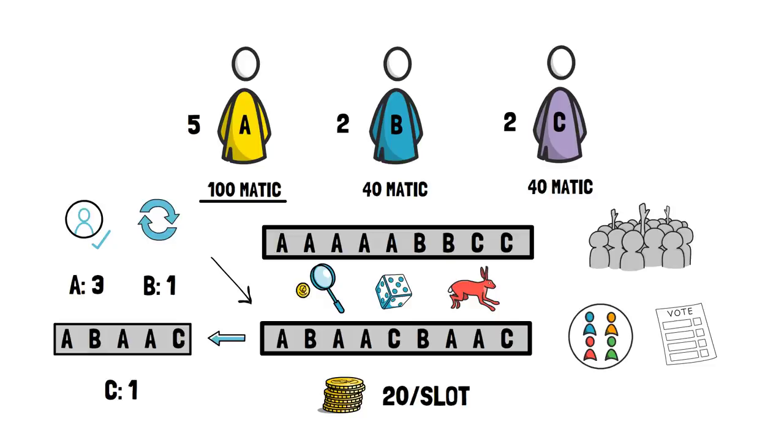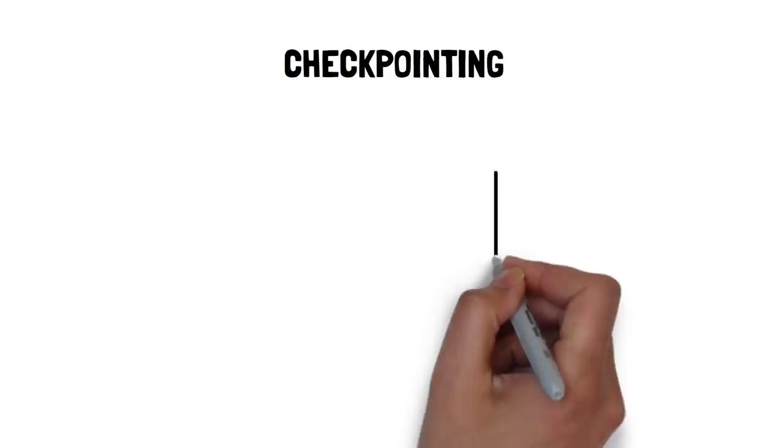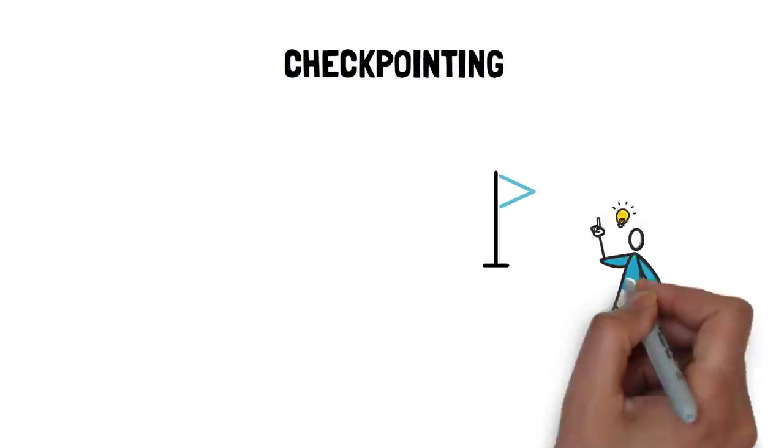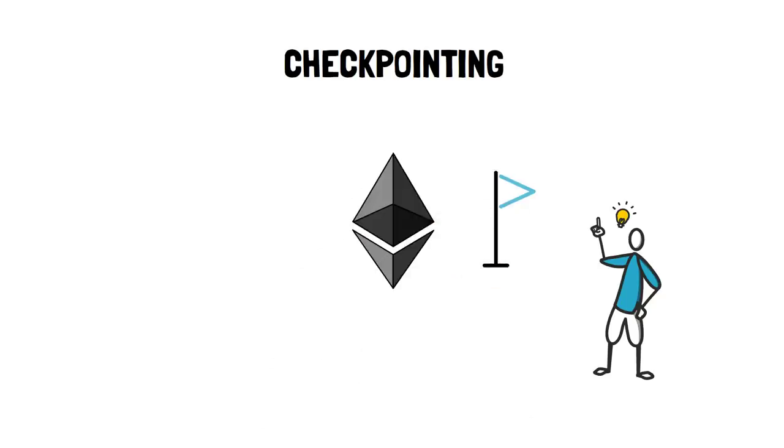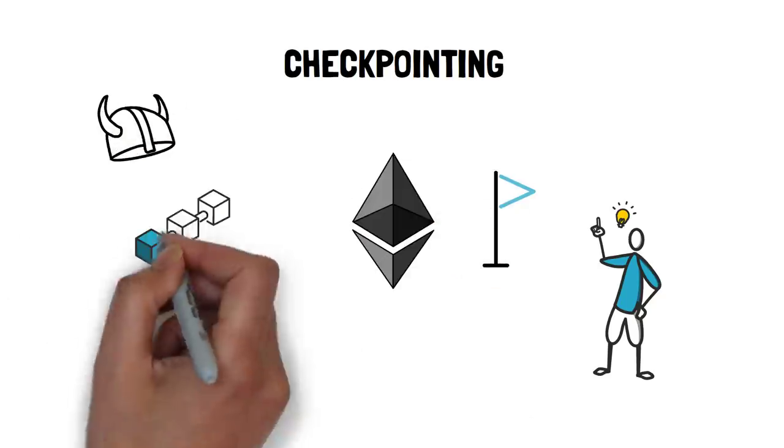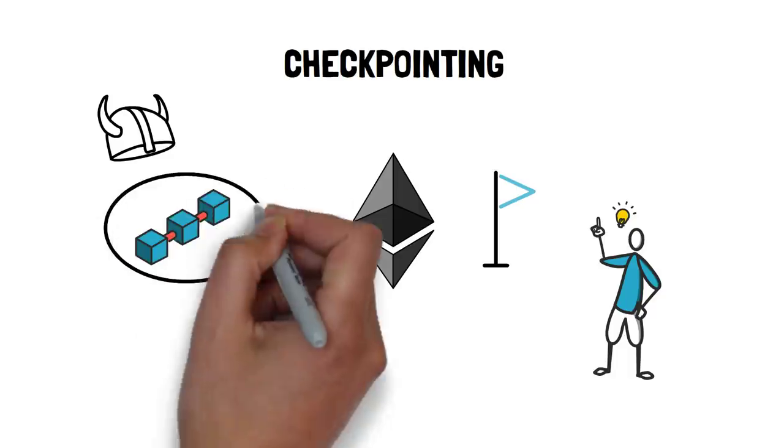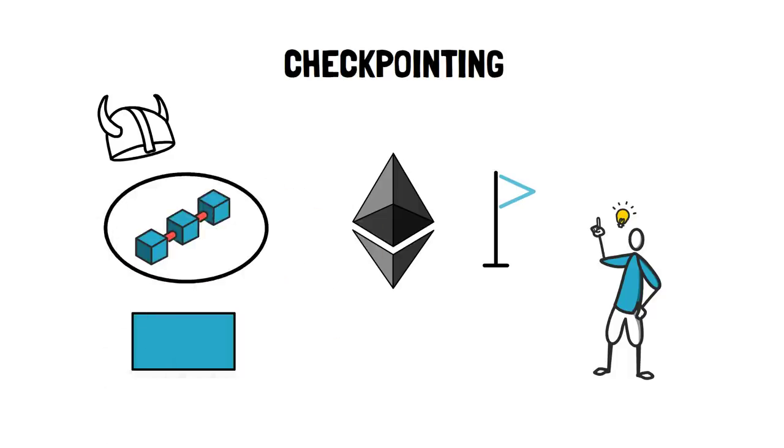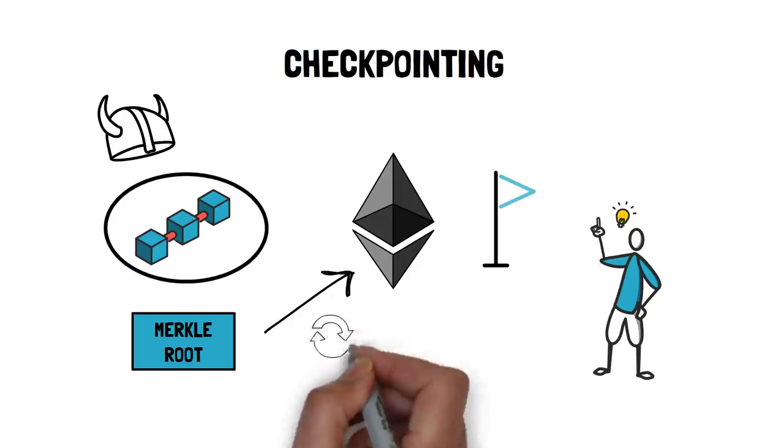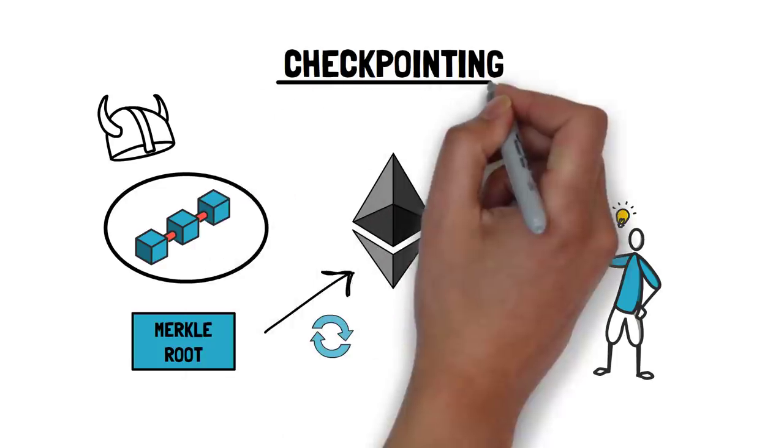Let's go back to the other important function of Heimdall, checkpointing. Checkpoints are important as they provide finality on the Ethereum chain. Heimdall layer allows for aggregating blocks produced by Bohr into a single Merkle root and periodically publishing it to the Ethereum mainchain. This published state is also called a checkpoint, hence the whole process is known as checkpointing.